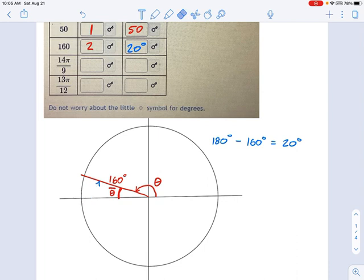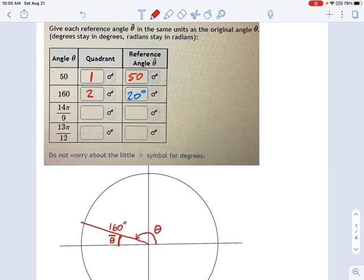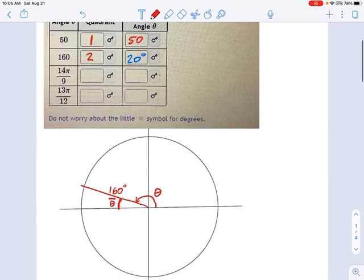When we talk about reference angles, remember we're always going to the x-axis, not the y-axis. Some people look at some angles, sometimes they go to the y-axis. We'll see an example of why that might be what you instinctively do, but it's always the x-axis. So 14π over 9, well, that's a little difficult to think about. Where is 14π over 9 on the unit circle? I would just divide 14 by 9. So 14π over 9, according to my calculator, is 1.55π.